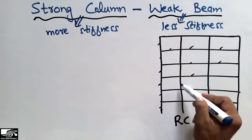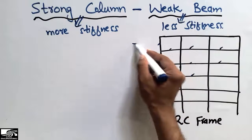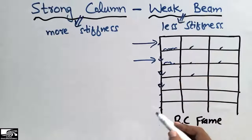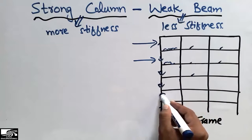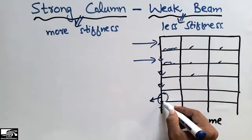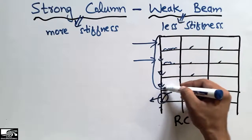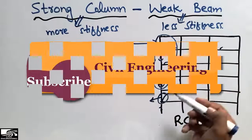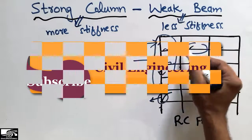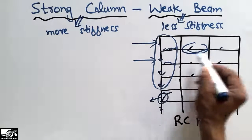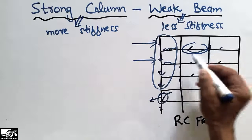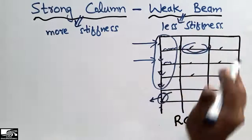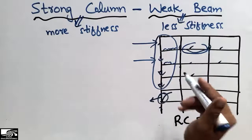When your columns are the strong members — these are the vertical members — when loads come onto these columns and this column fails, your whole story is going to collapse suddenly. While if this beam collapses, nothing happens to the columns; only this beam will collapse, not the whole structure.